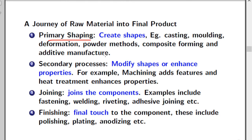The second set of processes are called secondary processes, in which we do two things: one is we modify the shape, and the other is we enhance properties. When we say modify the shape, we mean we add additional mechanical features. For example, we have created a cylinder and want to add threading to it, or we take a plate and add a hole — this is also called machining.